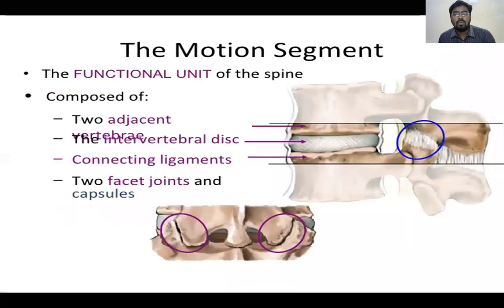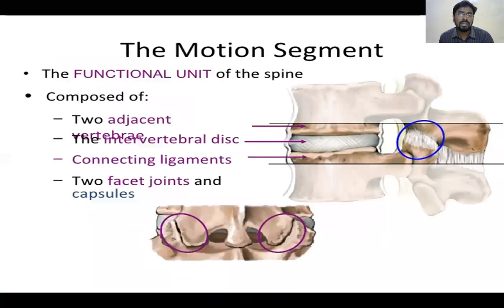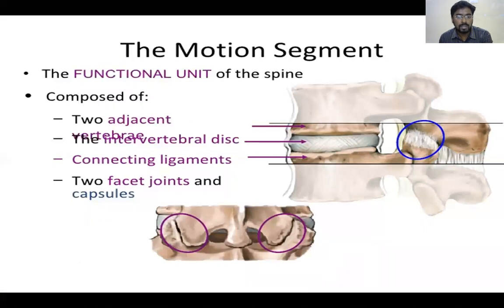What is the functional unit of the vertebral column or spine? It consists of two adjacent vertebrae and the intervening intervertebral disc and the posterior segments, which include the facet joints and surrounding elements. Due to this functional unit, we are able to move the spine either forward, backward, or in rotational movements.